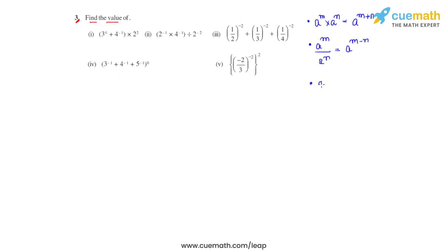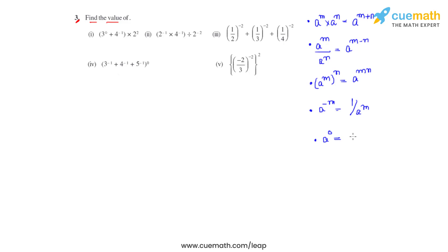Then we have a raised to m, whole raised to n — here the powers get multiplied, so the answer is a raised to mn. Then a raised to negative m: to make the power positive, we write it as 1 over a raised to m. And a raised to 0 — anything raised to 0, whether negative, positive, large or small, the answer is always 1.